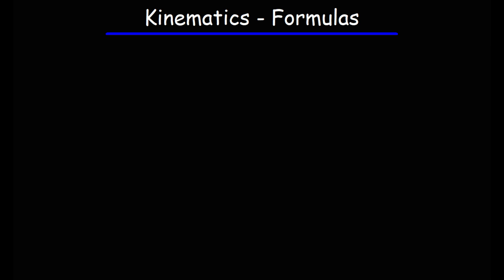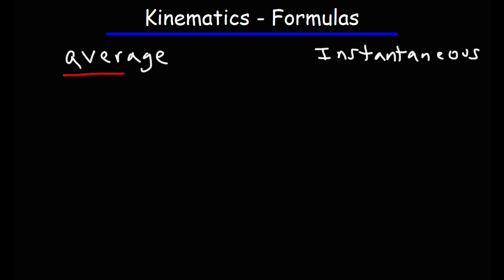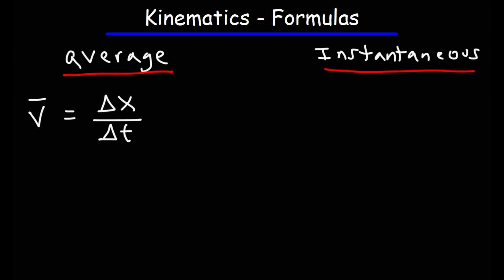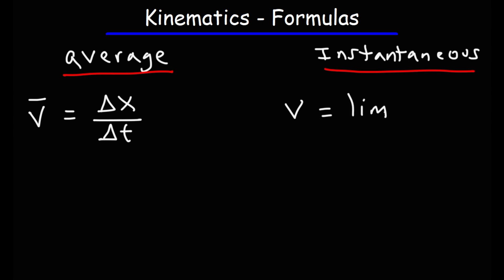Now let's talk about the difference between average velocity and instantaneous velocity, as well as average acceleration and instantaneous acceleration. The formulas we've been discussing relate to average velocity, which is displacement over time — or x-final minus x-initial over t. If you want to calculate instantaneous velocity — represented by v, while a bar on top means average velocity — you need to use the limit function: the limit as delta t approaches zero of delta x over delta t.